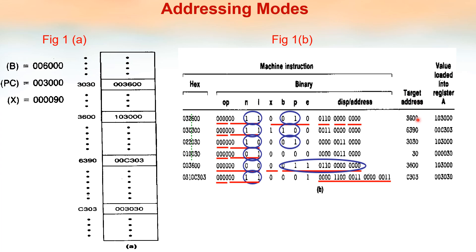In order to calculate the target address for program counter relative mode, we add the content of the program counter with the displacement. Target address equals displacement plus content of PC. The displacement value here is 600. The content of the program counter is 3000. So 600 plus 3000 equals 3600 — that is the target address. The value loaded into register A is the content at address 3600, which is 10300.